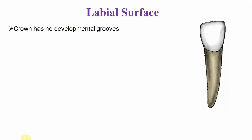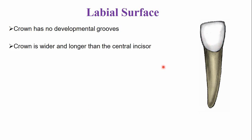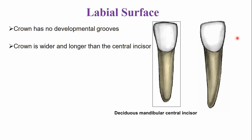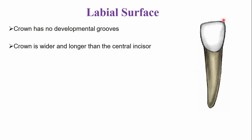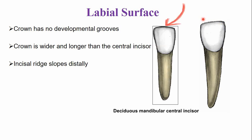Like the mandibular deciduous central incisor, the crown of this tooth has no developmental grooves and the crown is smooth. The crown of the mandibular deciduous lateral incisor, like the permanent lateral incisor, is wider and longer compared to the deciduous central incisor. The incisal ridge shows a slope from the mesial side towards the distal side, so the incisal ridge is not straight, unlike the mandibular deciduous central incisor.